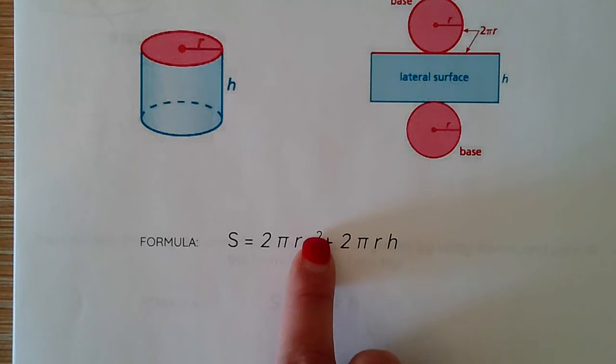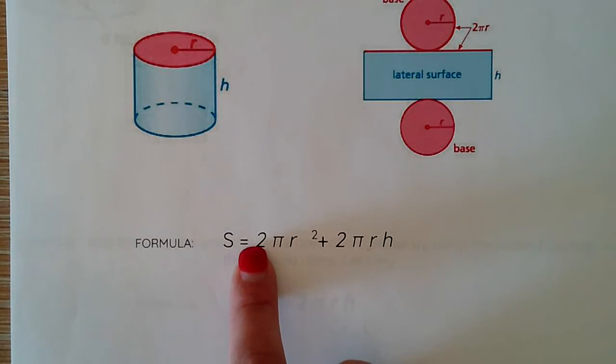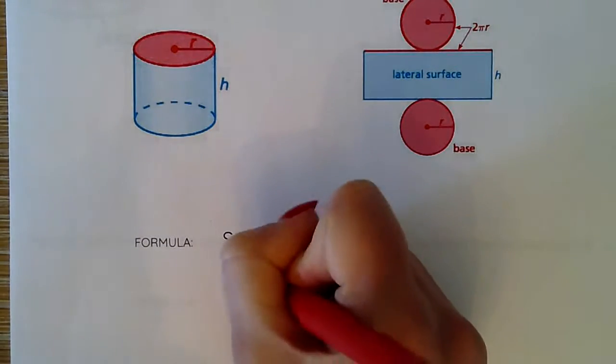πr² to find the area of a circle, but we have two circles that are identical. So we take our πr² from one circle and multiply it by two to get us the surface area of our combined circles. So this part right here is the area of your bases.